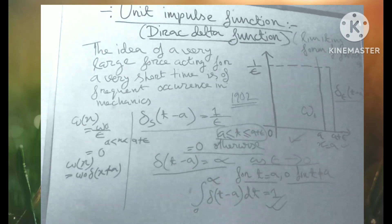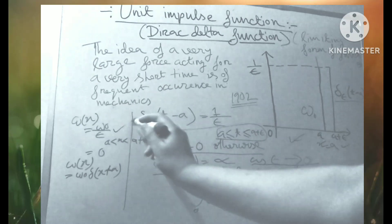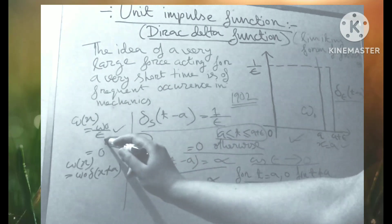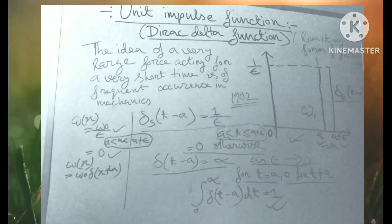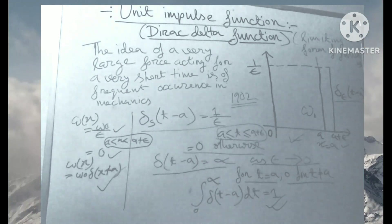So we can get w of x equals a when x equals a, and zero otherwise. And w of x equals w0 into del x plus a.